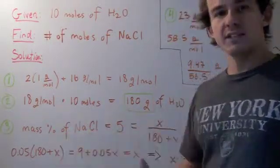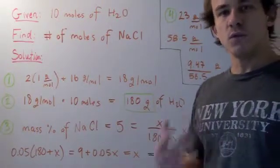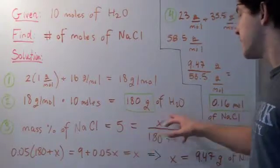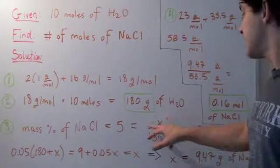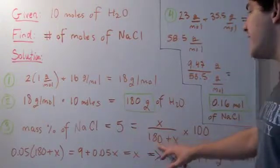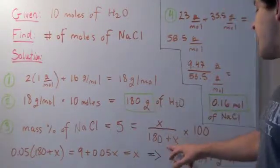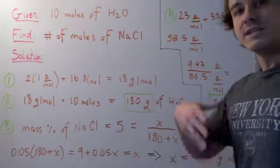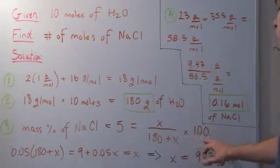Now we know we want to create a 5% by mass solution of sodium chloride, so we use the formula: 5% equals the number of grams of sodium chloride we need to add, divided by the total number of grams — so 180 grams of water plus x, where x is the number of grams of sodium chloride we need to add — multiplied by 100.